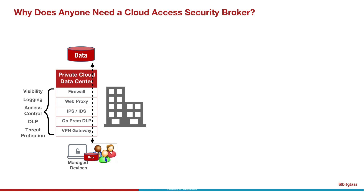There are really four problems that CASBs are trying to solve. The first one is that we don't live in the old world anymore, where data and applications resided in a private cloud data center that was on a campus, on-premise, or possibly in a co-location facility, where those data and applications sat behind a stack of security solutions that gave corporate IT staff and security staff visibility, access control, data loss prevention, threat protection,